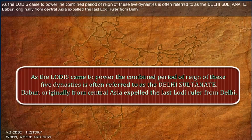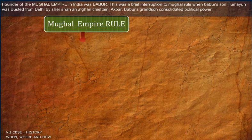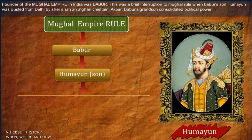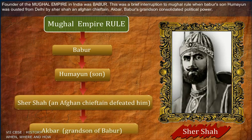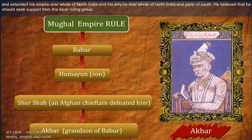Babur, originally from Central Asia, expelled the last Lodi ruler from Delhi and became the founder of the Mughal Empire in India. There was a brief interruption to Mughal rule when Babur's son Humayun was ousted from Delhi by Sher Shah, an Afghan chieftain. Akbar, Babur's grandson, consolidated political power and extended his empire over the whole of North India and parts of the South. He believed that he should seek support from the local ruling groups.